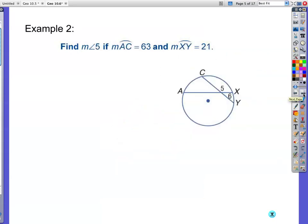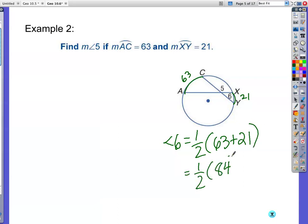Example two, find the measure of angle five. They give us arc AC is 63. XY is 21. Now, we're not gonna be able to find five right away. What I would do is find six. Find angle six, and then we'll use that to help us figure out angle five. So angle six, one half, 63 plus 21. Half of 84 is 42 degrees. So now you're gonna take 180 minus 42, and I believe that's gonna be 138. Yeah, that's all there is to it.